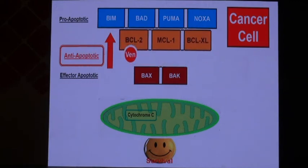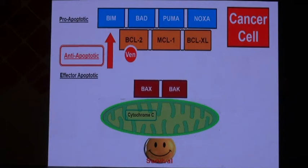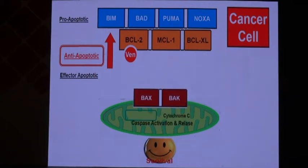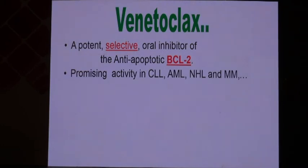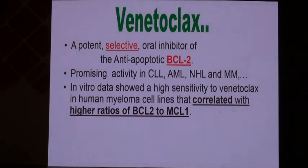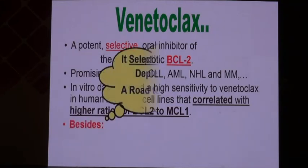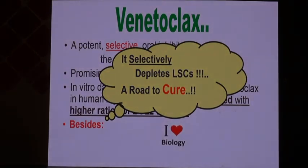Venetoclax is a BCL-2 inhibitor that selectively binds to BCL-2, keeping it away from the effector apoptotic proteins and allowing them to reach the mitochondria and induce cancer cell apoptosis. Venetoclax is a potent, selective, oral inhibitor of anti-apoptotic BCL-2 with promising activity in many blood cancers — from CLL to myeloma, including AML. In vitro data shows efficacy correlates with whether the cell depends on BCL-2. Importantly, it selectively attacks leukemic stem cells while sparing normal stem cells.